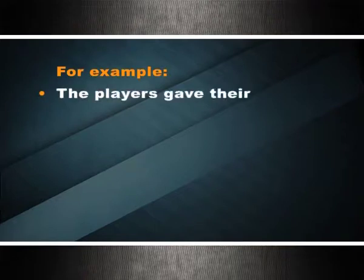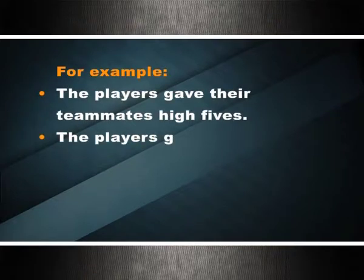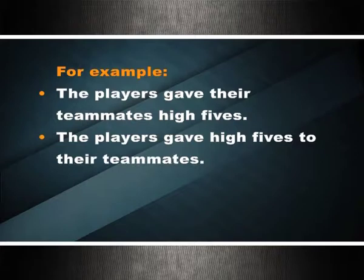A ditransitive verb — sometimes called a dative verb after the verb 'give' — is followed by either two noun phrases or a noun phrase and a prepositional phrase often led by 'to' or 'for.' For example: the players gave their teammates high fives; the players gave high fives to their teammates. When two noun phrases follow a ditransitive verb, the first is the indirect object (that which is receiving something) and the second is the direct object (that which is being acted upon).